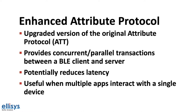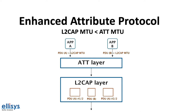The way this works is by separating the L2CAP layer maximum transmission unit or MTU from the attribute layer's MTU. Here's an example to better visualize this. If the L2CAP layer MTU is smaller than the attribute layer MTU, then this will cause the L2CAP layer to break up the PDUs coming from the upper attribute layer into smaller chunks and interleave the PDU chunks coming from different applications.